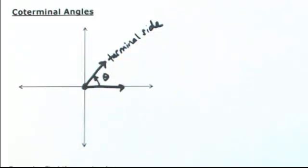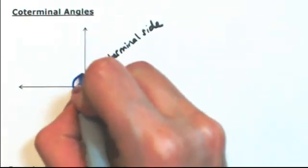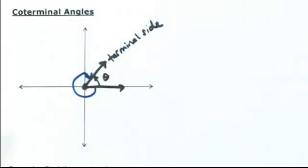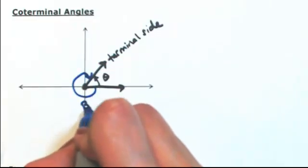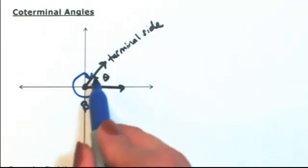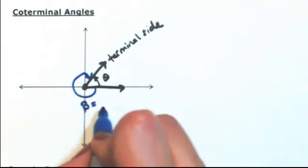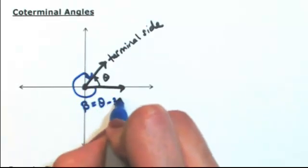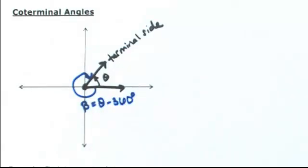Now let's say we start from the same initial side but go the other way, still ending on that terminal side. Different angle, let's call that beta. If you look at it, this is actually theta minus 360, so this is going to be a negative angle.